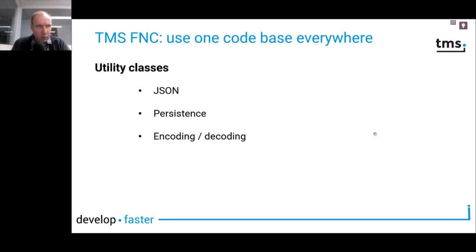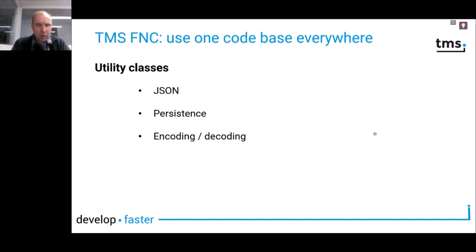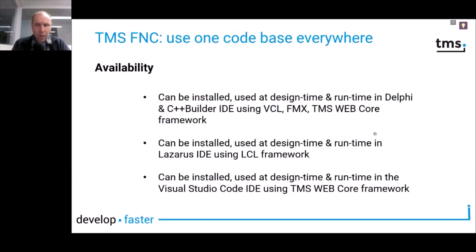Another not-so-visible part of the FNC components is a set of utility classes. If you need to deal with JSON or XML, those are included. There is a persistence component in FNC Core for persisting component settings, and all kinds of encoding and decoding functions are included in FNC Core.